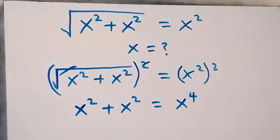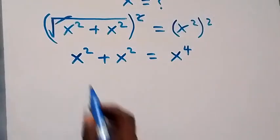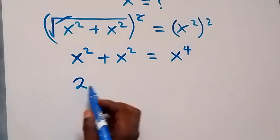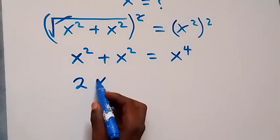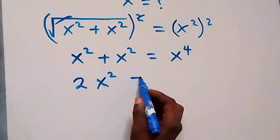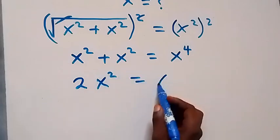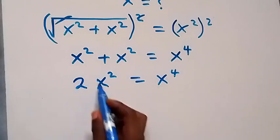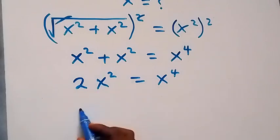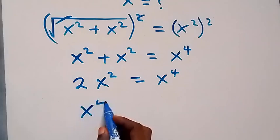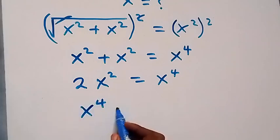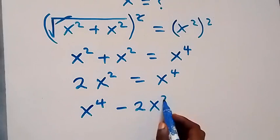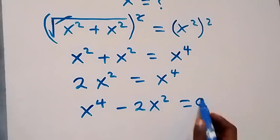x squared plus x squared is the same as 2x squared, which equals x raised to power 4. We rearrange by taking 2x squared to the other side, giving us x raised to power 4 minus 2x squared equals 0.